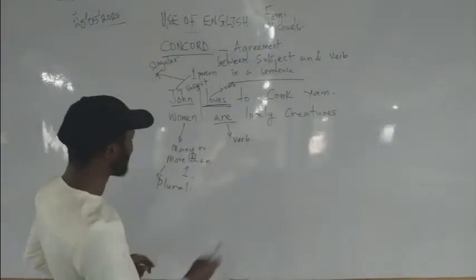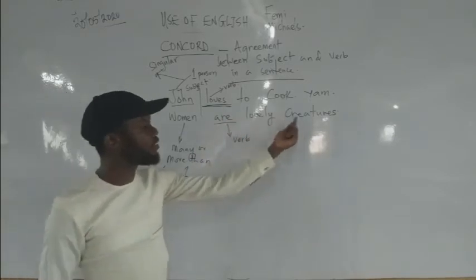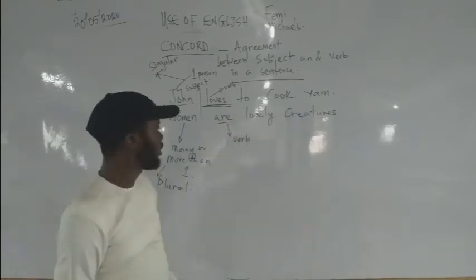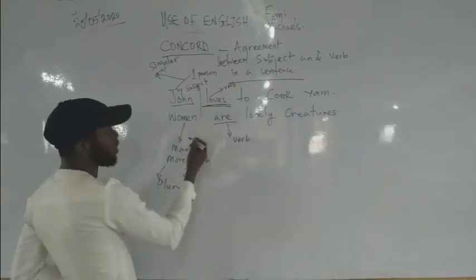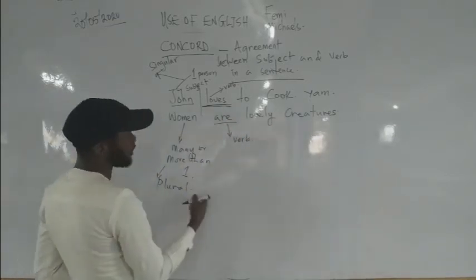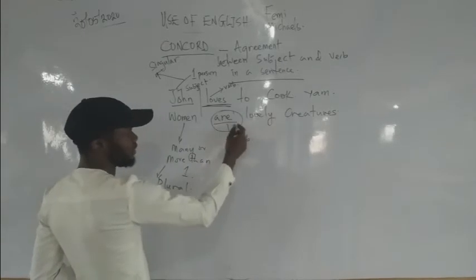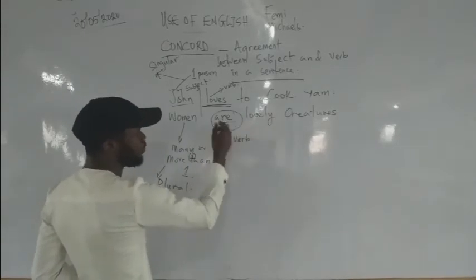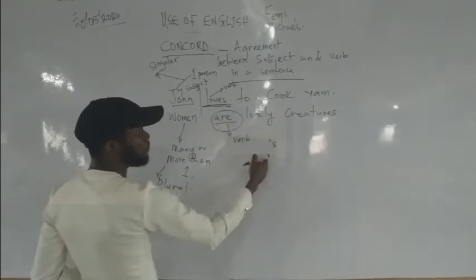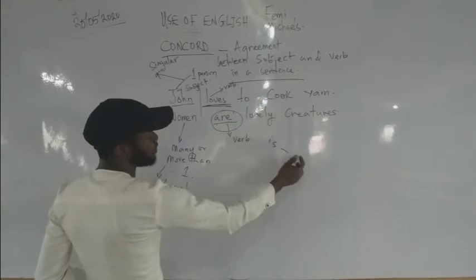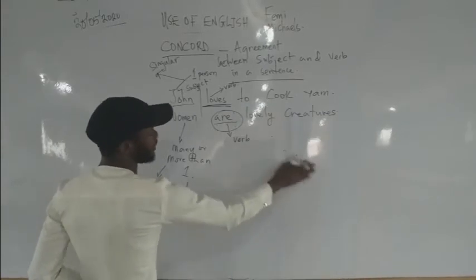Women are lovely creatures. 'Women' is plural. 'Are' is the verb — it is the plural form of 'is'. So: is, are. Do you get that? Our focus is on how the subject and verb go together such that our expression is grammatical and correct.